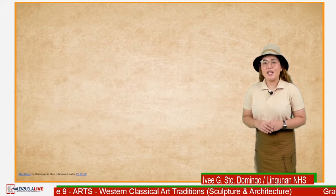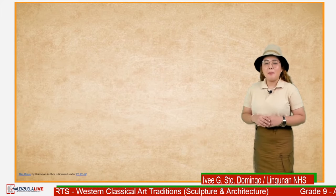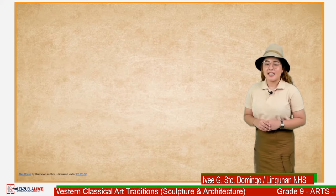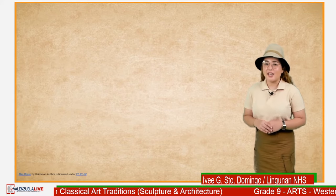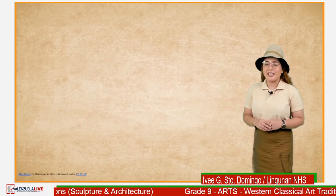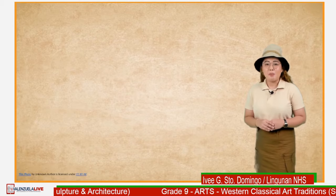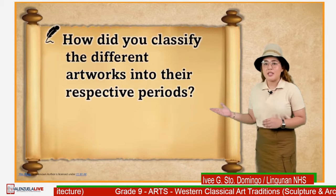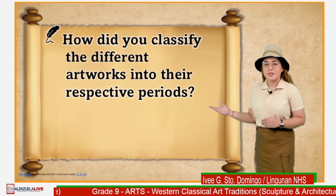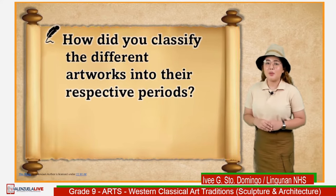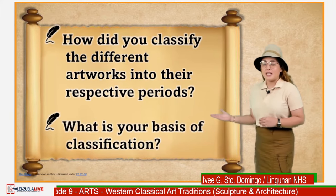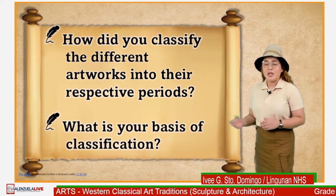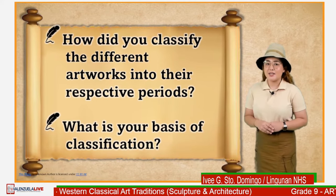Let us now answer the following questions based on our previous task, Classifying Sculptures and Architectures. You may key in your answers to our comment section or you may write them directly on your answer sheets. Number 1: How did you classify the different artworks into their respective periods? And for number 2: What is your basis of classification? You have 30 seconds to answer.